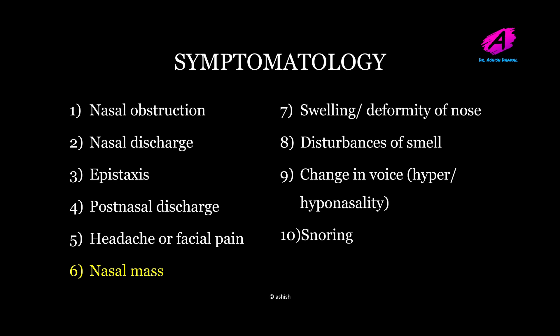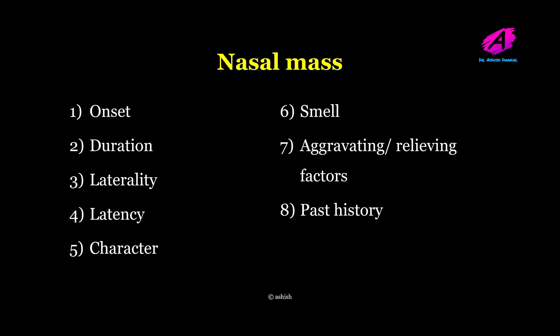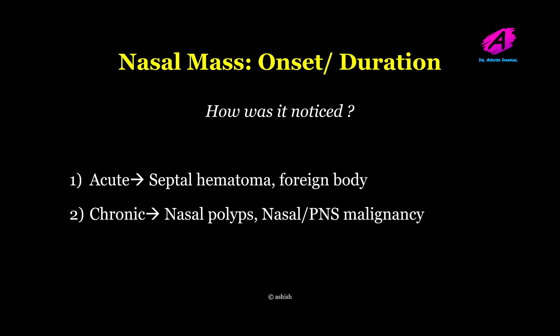The other symptom a patient may present with is nasal mass. If a patient comes with a complaint of nasal mass, ask about onset, duration, laterality, character, smell, and aggravating and relieving factors, as well as past history. Ask the patient how it was noticed — whether by themselves or someone else. Acute causes of nasal mass include septal hematoma or foreign body, while chronic causes include nasal polyps, nasal or paranasal sinus malignancy.